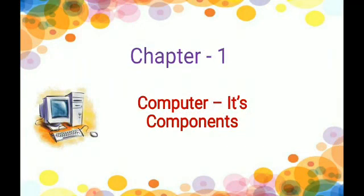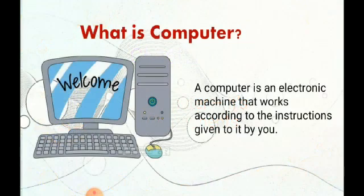So let's start the chapter with the definition of computer. A computer is an electronic machine that works according to the instructions given by you. Computer can accept the data, manipulate the data, that means process the data, and produces the result according to the instructions given by you and stores the result for the future use.